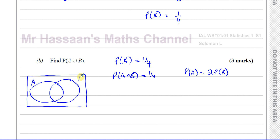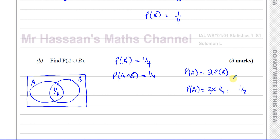We have A and B. The intersection here is 1/8. We also know the probability of B is 1/4. Therefore, the probability of A is 2 times 1/4, which is 1/2, because the probability of A is 2 times the probability of B. So the probability of A is equal to 1/2.